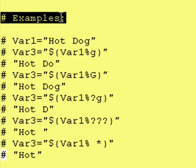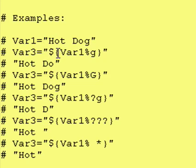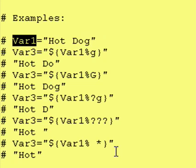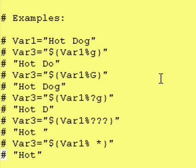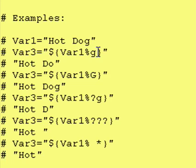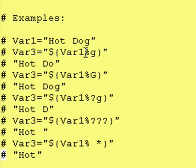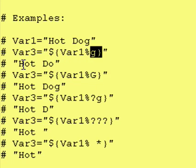We have some examples and these are all commented out. However, I did actually run them on the command line and posted the output along with the examples. Our first example: we have var1, we assign to it the words hot dog, and we then create a variable called var3. We assign to it dollar sign curly brace var1, percent sign lowercase g, curly brace. This says take the contents of var1, put them right here — that's hot dog — and try to remove from the right-hand side a lowercase g. Because hot dog does end in a lowercase g, we end up with this result.